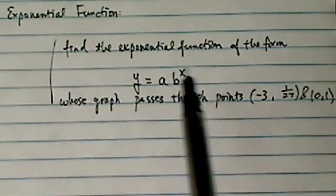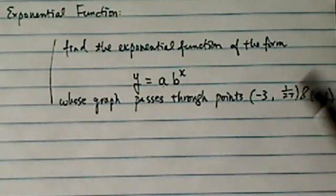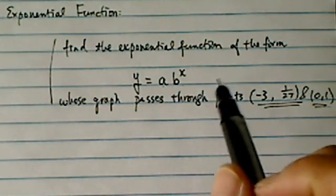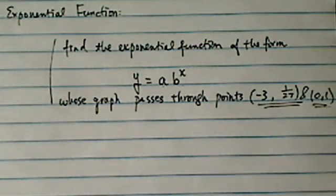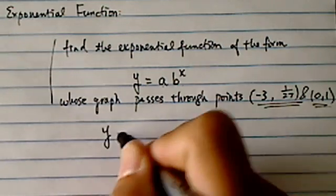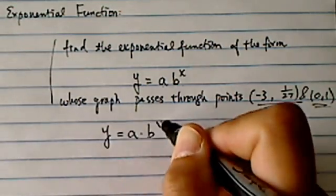We're given a couple of clues and asked to find what A and B is, and of course there should be two clues because we have two variables. So let's get started. I like those kind of questions. They're tricky, but pleasant. A times B to the X.